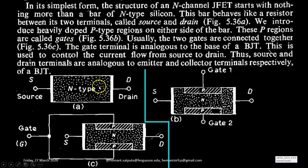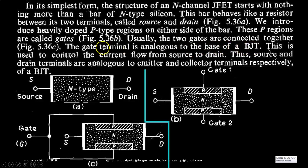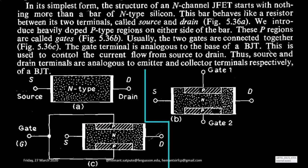We introduce heavily doped P-type regions on either side of the bar. These P regions are called Gates — look at figure B. Usually, the two gates are connected together as shown in figure C. The gate terminal is analogous to the base of BJT, and it is used to control the current flow from the source to drain. Thus, source and drain terminals are analogous to the emitter and collector terminals respectively of a BJT. So in FET, source is analogous to emitter, drain is analogous to collector, and gate is analogous to base.